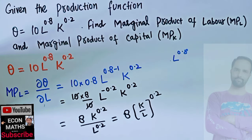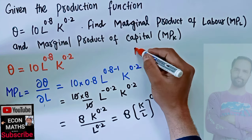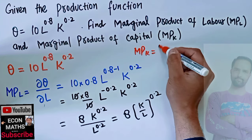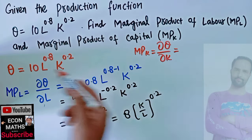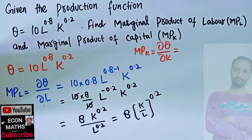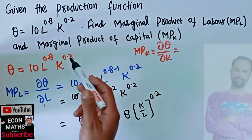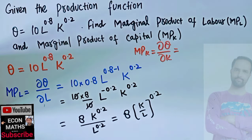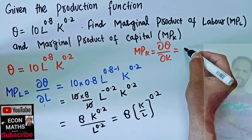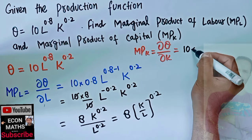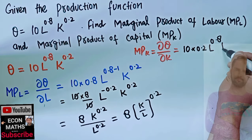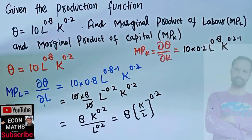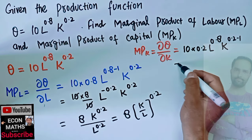Symmetrically, we find the marginal product of capital as the partial derivative of the production function with respect to K. Differentiating with respect to K, the exponent of K (which is 0.2) becomes the coefficient by the power function rule, giving 10 × 0.2 × L^0.8 × K^(0.2−1).